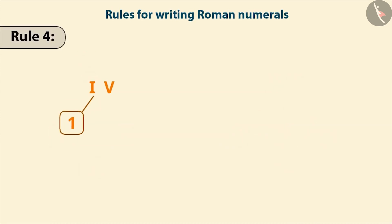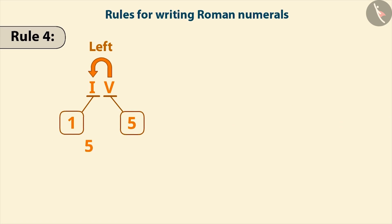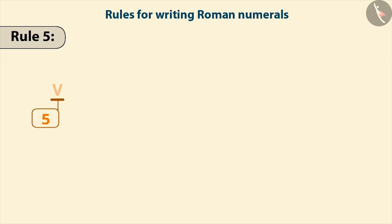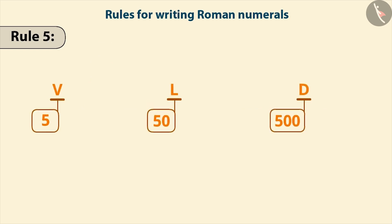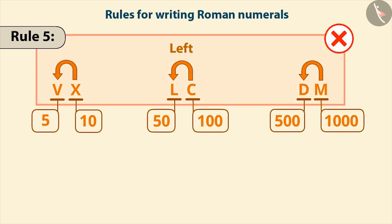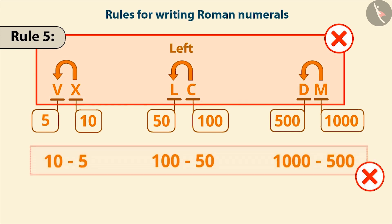Similarly, if the symbol of smaller value is written to the left side of the symbol of larger value, then the smaller value is subtracted from the larger value. Just like subtracting 1 from 5 gives the number 4, and subtracting 1 from 10 gives the number 9. The symbols of 5, 50 and 500 are never written to the left of the symbol of larger value — that means these symbols are never subtracted.